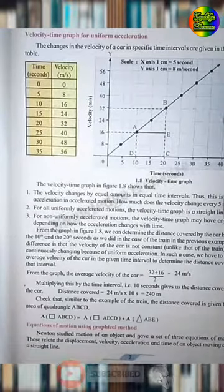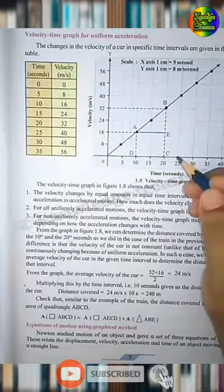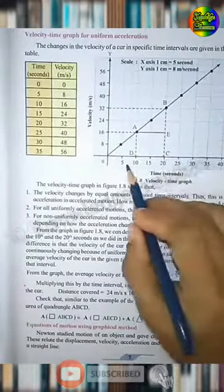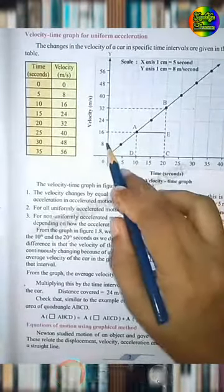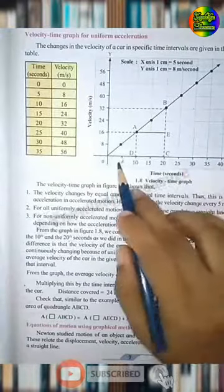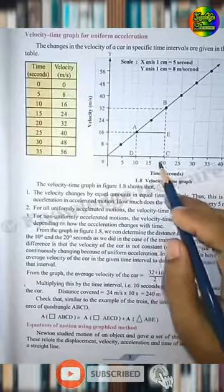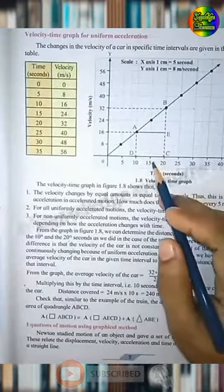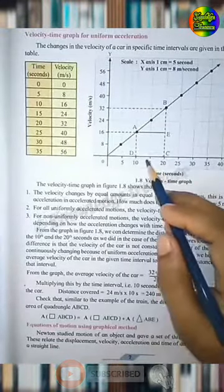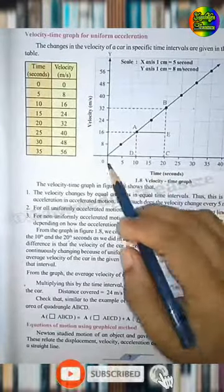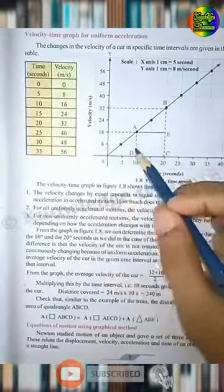So, can you see the velocity increases at 8 meter per second every 5 seconds. That is, the acceleration of a car is constant in this case, because the change in velocity is constant.